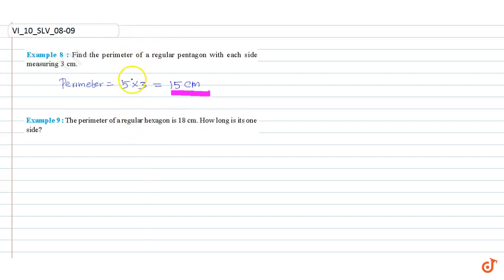We know that a regular hexagon has 6 sides and its perimeter is 18 cm. So, 6 times the length of one side equals the perimeter, which equals 18 cm.